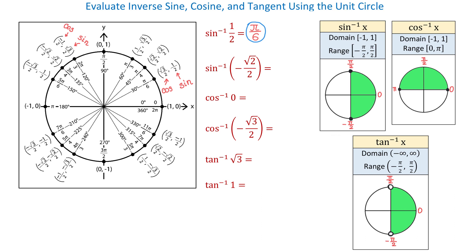Now let's see the next example. Here we have to evaluate inverse sine of negative square root of 2 over 2. On the unit circle, we see two angles whose sine is negative square root of 2 over 2: that is 5 pi over 4 and 7 pi over 4. But again, the angle has to be either in quadrant 1 or quadrant 4. Therefore, 5 pi over 4 will not work. What about 7 pi over 4? With inverse sine, if the angle is in quadrant 4, then it has to be negative.